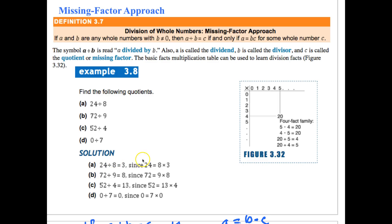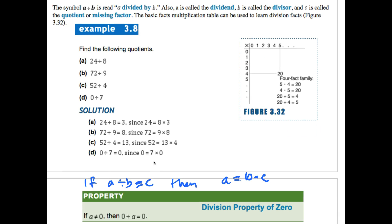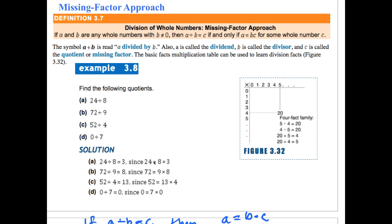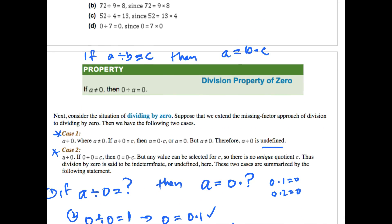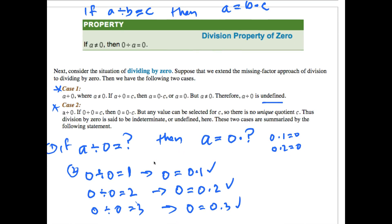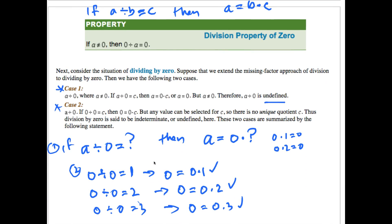Where we left off was the missing factor approach — that was the last thing we looked at. The next thing, which we'll use in this next situation, is this idea of division by zero.